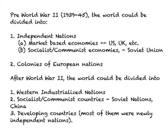At the end of World War Two, the world could be divided into three parts. One: the Western industrialized nations like the US and UK. Two: countries which followed socialist or communist principles — the Soviet nations like the Soviet Union, East Germany, Poland, Czechoslovakia, and also China. The third group was essentially the former colonies of European nations that had become independent. When they became independent, these countries were extremely poor, and since they wanted to develop, they were called developing countries.